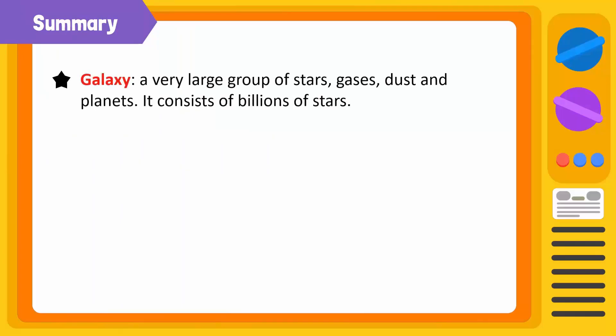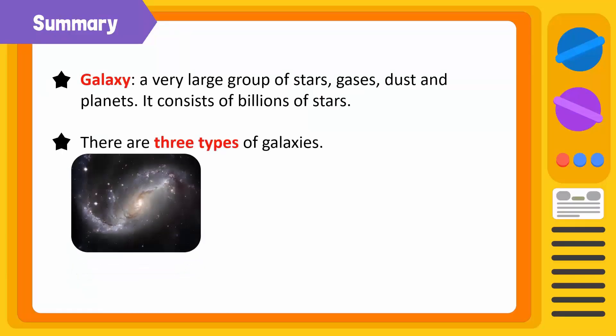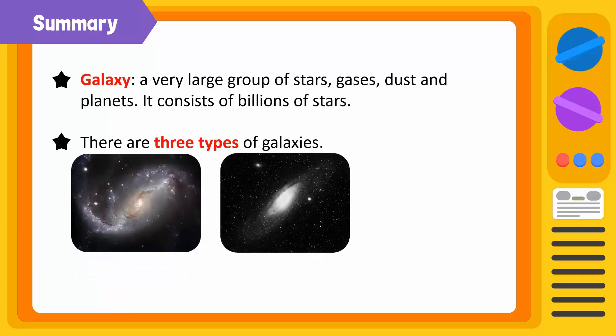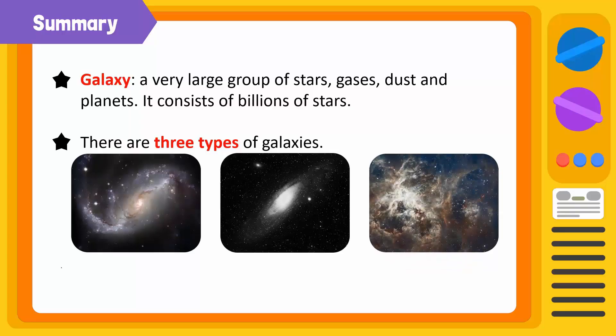A galaxy is a very large group of stars, gases, dust, and planets. It consists of millions and billions of stars. There are three main types of galaxies: spiral galaxies, elliptical galaxies, and irregular galaxies. A constellation is a group of stars with a definite pattern or arrangement.